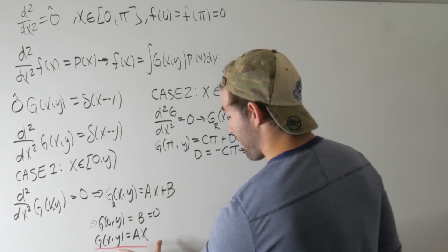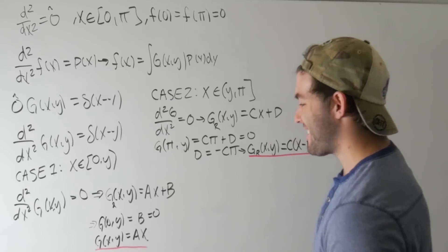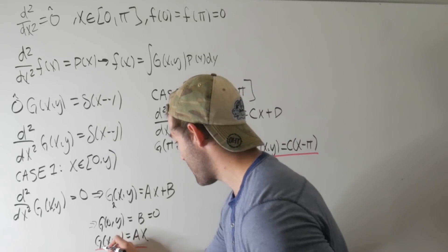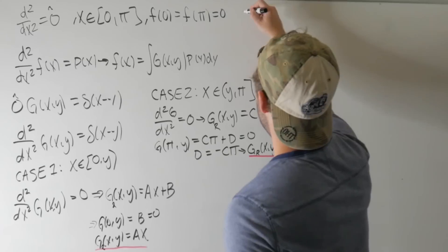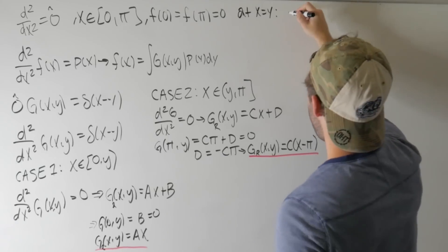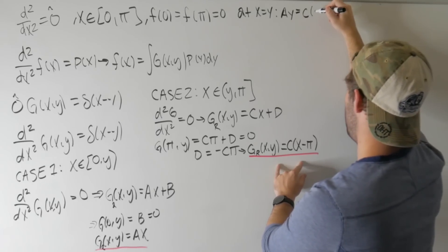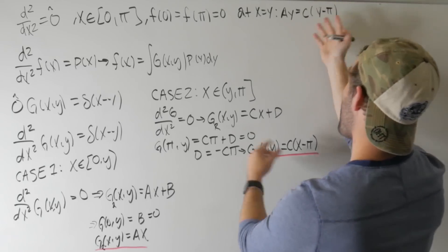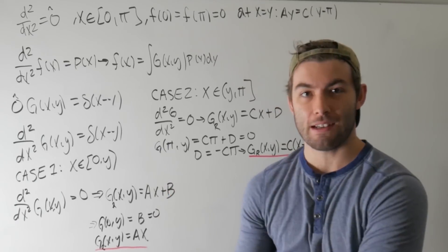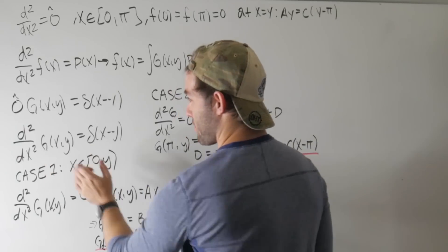Now we need the remaining two conditions. The first is that at x = y, both solutions must agree: G_L(y,y) = G_R(y,y), giving ay = c(y − π). We'll use this along with the jump condition on the derivative.